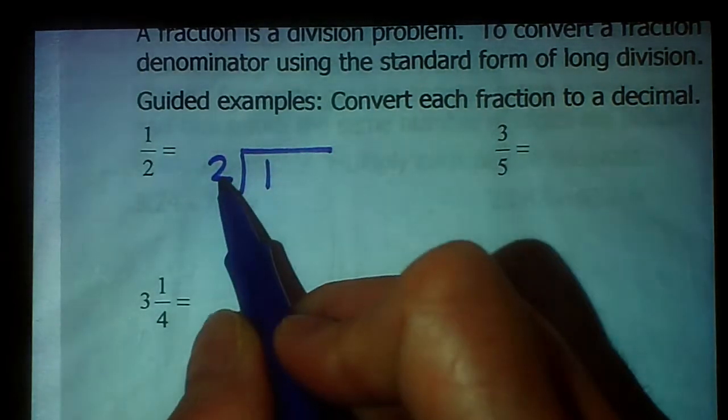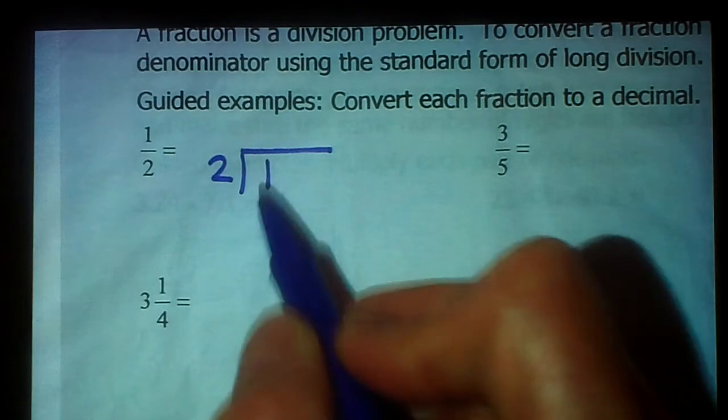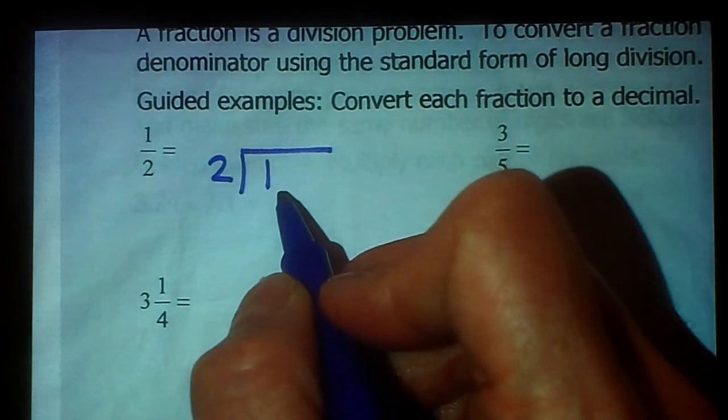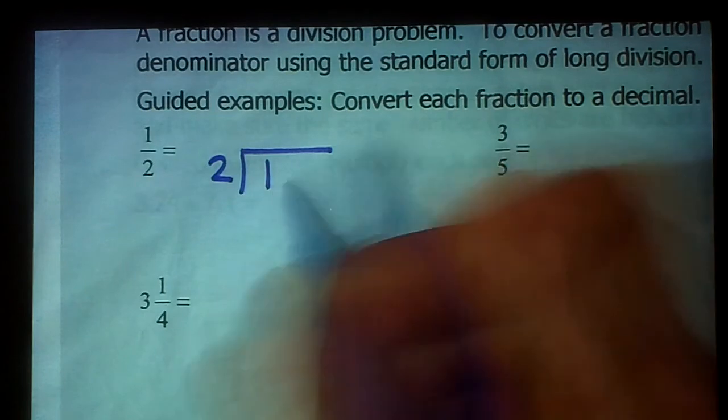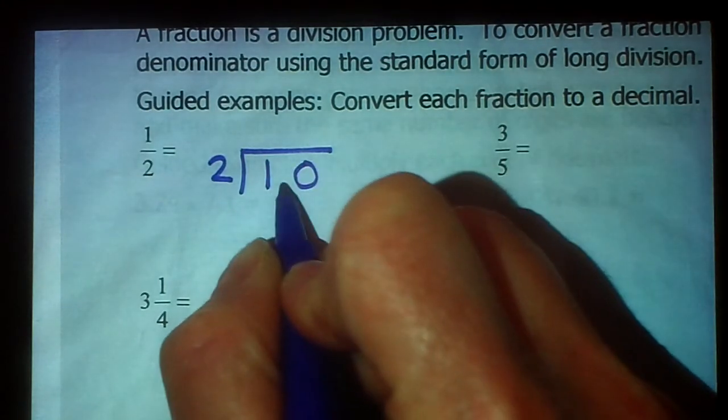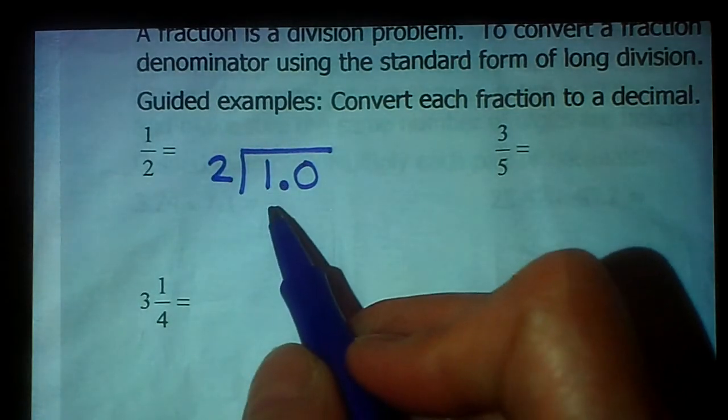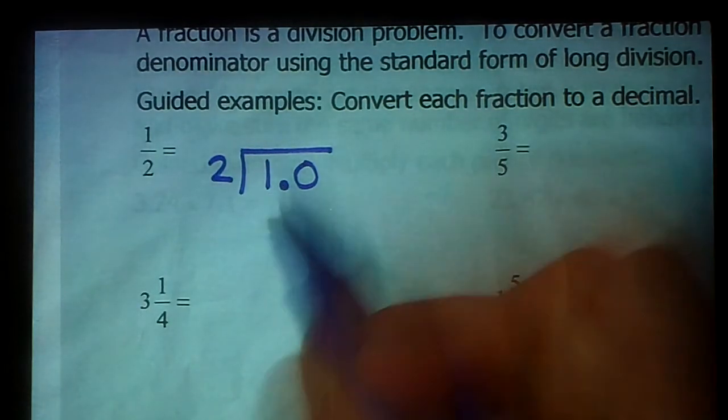So we're supposed to take 2 and divide that into 1. Maybe you notice that 2 does not go into 1. So I need some more places here. But I don't want to change the value of the 1. So I can add a 0 as long as I put a decimal point here. Because isn't 1 the same value as 1.0? Well, yes it is.